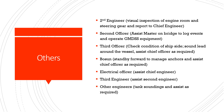The second engineer may engage in the visual inspection of the engine room and steering gear and report to the chief engineer. The second officer may assist the master on bridge to log events and operate the GMDSS equipment. The third officer may check the condition of the ship's side, sound lead around the vessel to get an assessment of the seabed on which the ship has grounded, and assist the chief officer as required. The boson may stand by forward to manage anchors and assist the chief officer, especially if ground tackles have to be laid out for refloating the vessel. The electrical officer and third engineer may assist the chief engineer in the engine control room, while other engine department members assist in taking soundings of tanks.